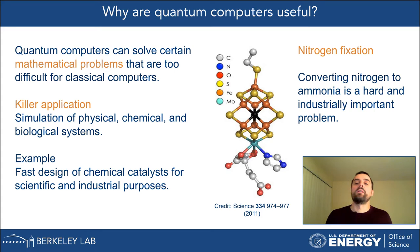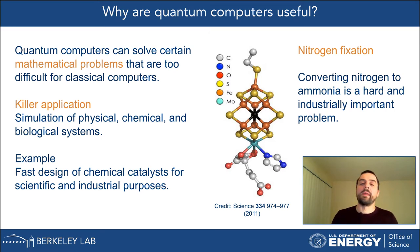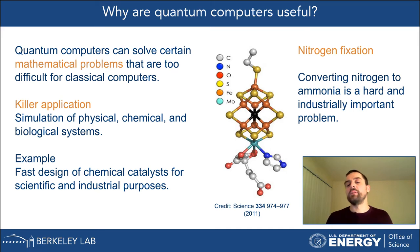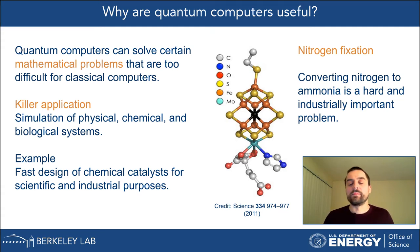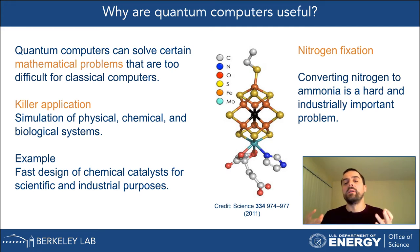We already know it's possible to do this more efficiently because there is a small bacteria that can fix nitrogen more efficiently. That bacteria uses a specific molecule to perform this reaction, but the problem is we don't know how it works. If we want to design similar technologies, it's important to understand this process, because without that it's very difficult to come up with good candidate molecules. Simulating and calculating properties of molecules is an area where quantum computers are expected to excel.